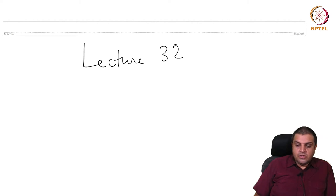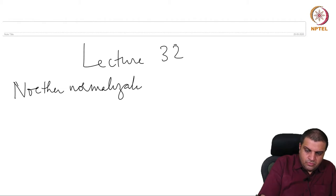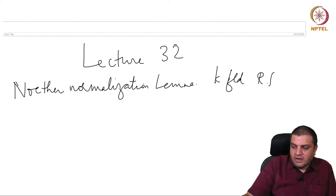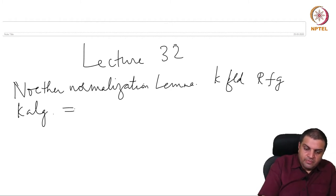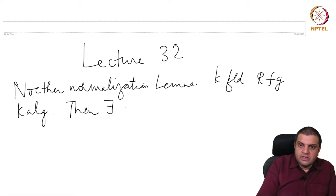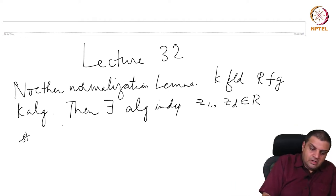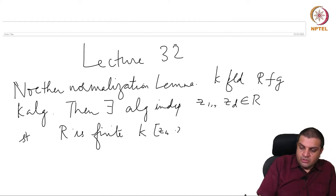This is lecture 32. In the last lecture we saw a Noether normalization lemma: if K is a field and R a finitely generated K algebra, or in other words a finite type K algebra, then there exist algebraically independent Z1 through ZD inside R such that R is finite over the subalgebra K[Z1,...,ZD]. So this subalgebra is isomorphic to a polynomial ring and R over this is finite.